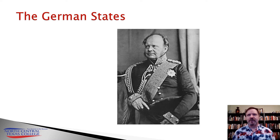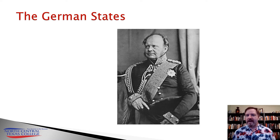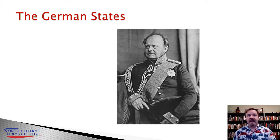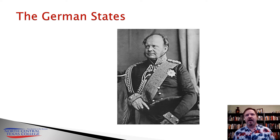These revolutionaries really couldn't decide which German authority they wanted to fall under. At the time in Europe, there were two major Germanic powers: Prussia and Austria. Different groups were going back and forth, wanting to fall under the influence of one or the other. Neither monarchy wanted to rule under any kind of liberal constitution.